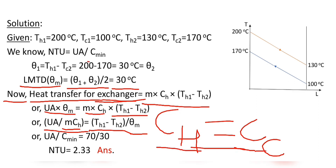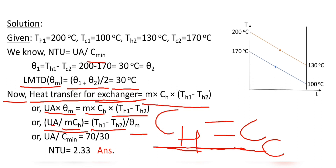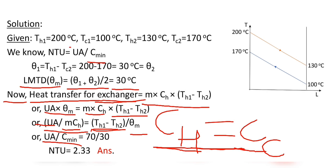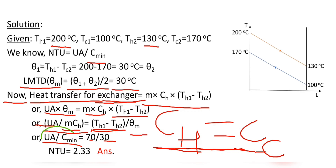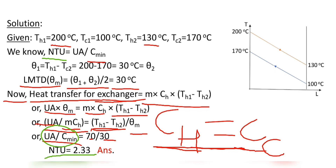The minimum heat capacity Cmin equals either MCH or MCC. So this equation becomes UA divided by Cmin equals (TH1 minus TH2) divided by θM. That is (200 minus 130) divided by 30, which is 70 divided by 30. Since UA divided by Cmin equals NTU, the value of NTU is equal to 2.33.